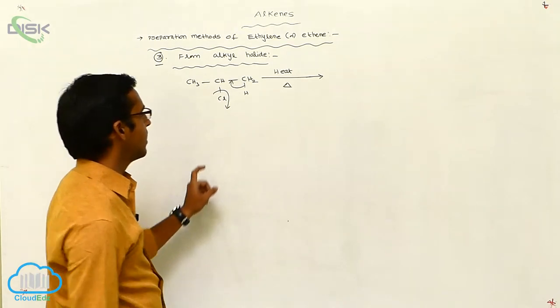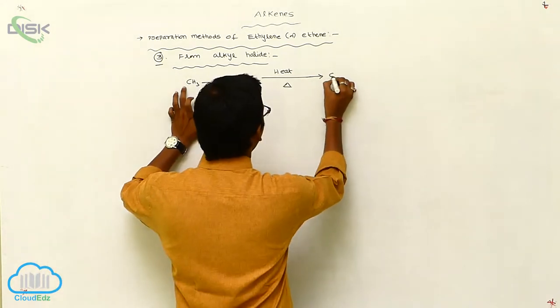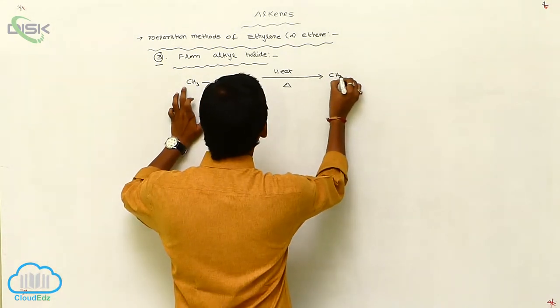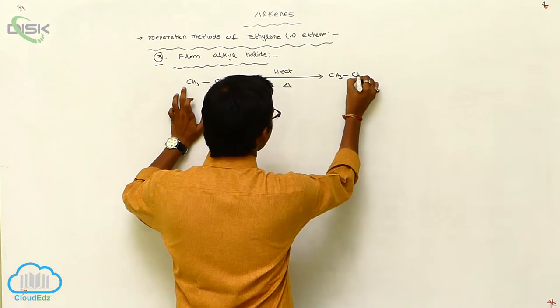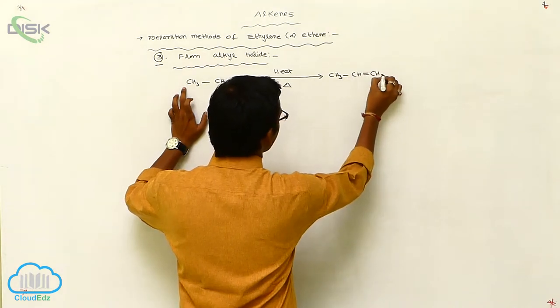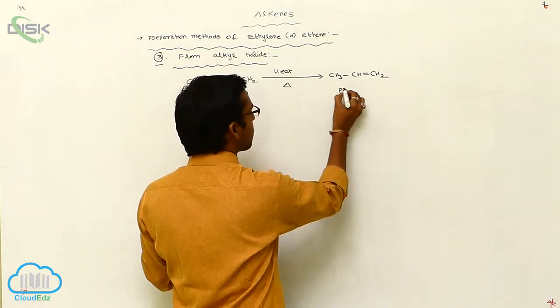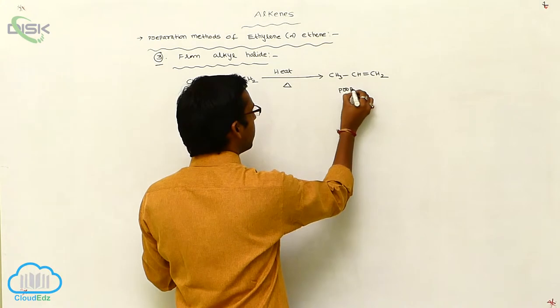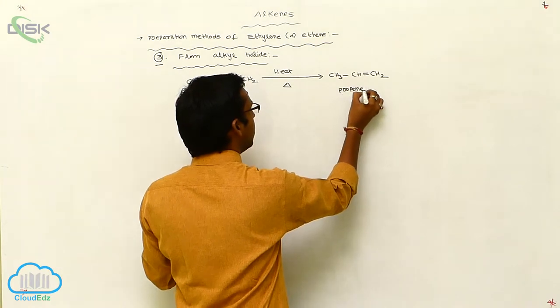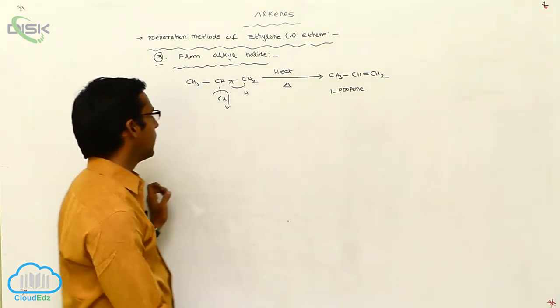H2 plus Cl minus — elimination of HCl. It finally gives CH3, CH double bond, CH2. This is called propene — specifically, 1-propene.